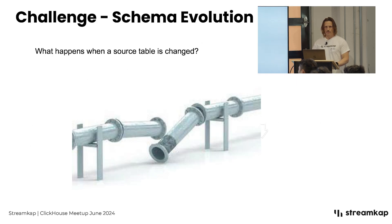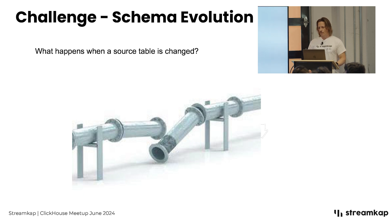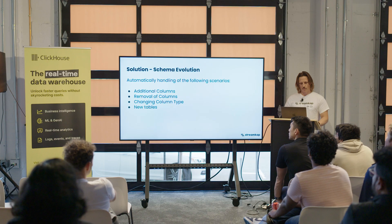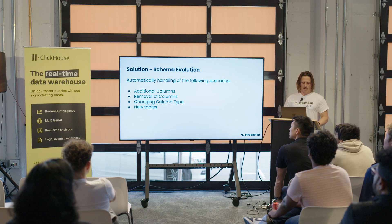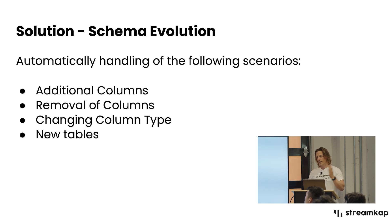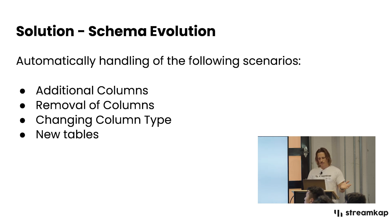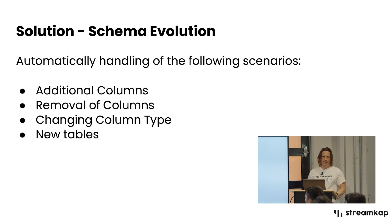If you have upstream changes to your databases, that often causes broken pipelines or lost data. So with our CDC connector: if you've got additional columns, we'll automatically add them to the table at the destination. If you have a changing data type in a column, we'll add a new column named column_underscore_new_data_type. And if you've got new tables being added, we'll automatically add those into ClickHouse.